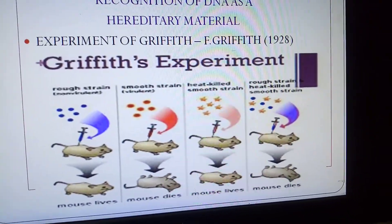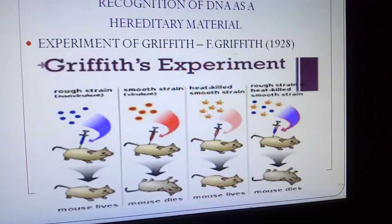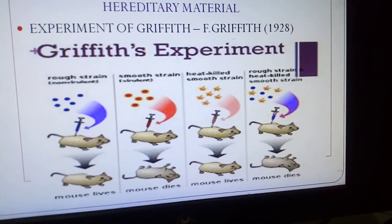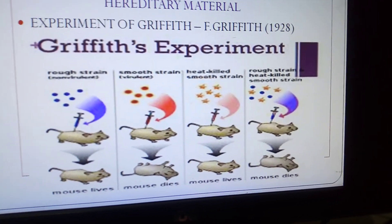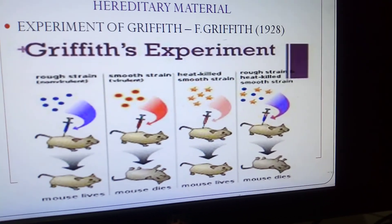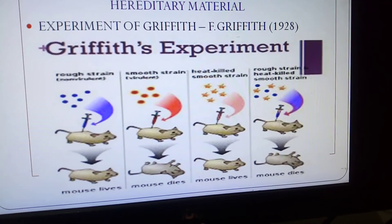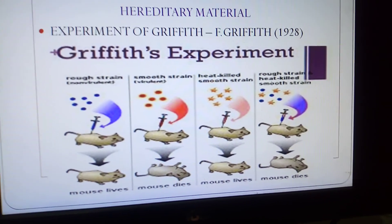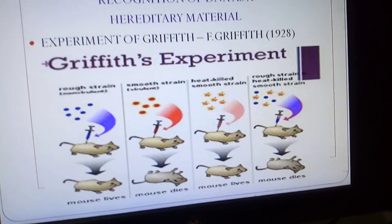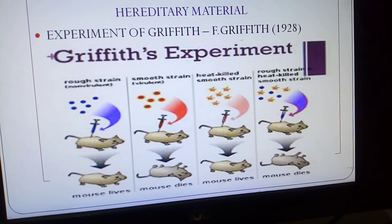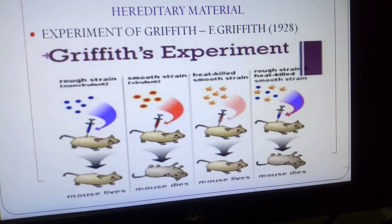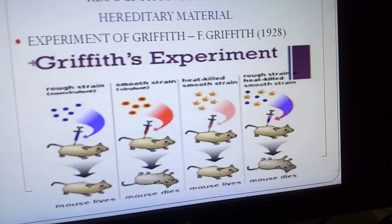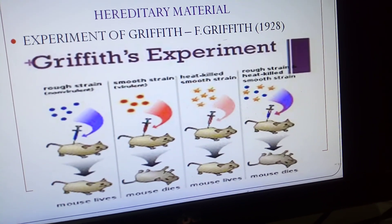The experiment of Griffith was discovered by F. Griffith in 1928. Four types of strains are present: rough strain, smooth strain, heat-killed smooth strain, and heat-killed rough strain.